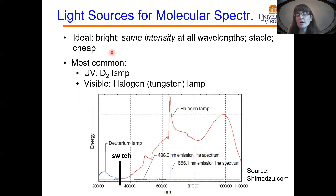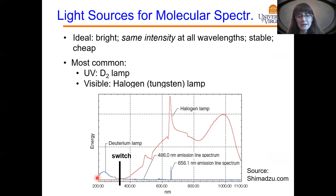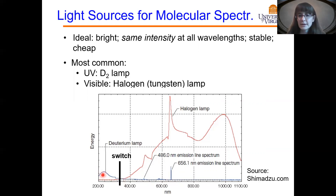No one light source meets all of these criteria, so in reality we end up having to choose and prioritize different ideals depending on our application. The most common light source used for UV-visible spectroscopy is actually a combination of two light sources. When we want to look in the deep UV at less than 300 nanometers, we use a deuterium lamp. Its emission spectrum is shown here as the blue curve, and you can see it really only emits below about 300 nanometers. So the deuterium lamp is really good for deep UV.